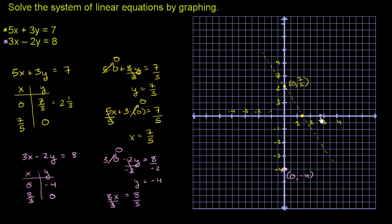That x-intercept puts us right about at (8 thirds, 0). Now let me connect these two dots as a dotted line — it goes something like that. Eyeballing it, these two lines intersect right over there. I'm hoping this gives us a clean answer, and it looks like the intersection is the point (2, negative 1) — the x value is 2 and the y value is negative 1.